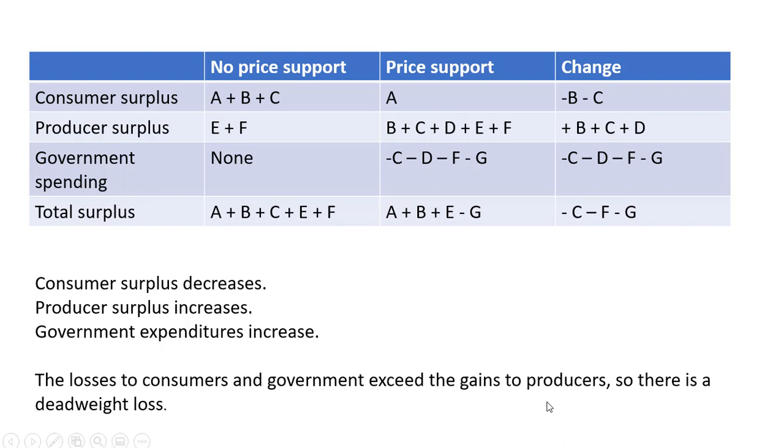So even though the producers gain, the gains to the producers do not outweigh the losses to the consumers and the government. So there is a deadweight loss and the deadweight loss is given by this area here, C, F, and G. I'll stop here.